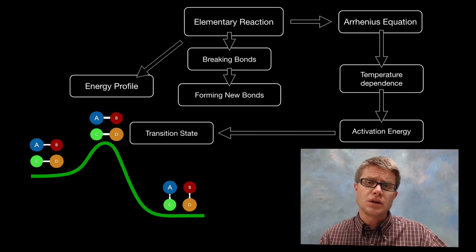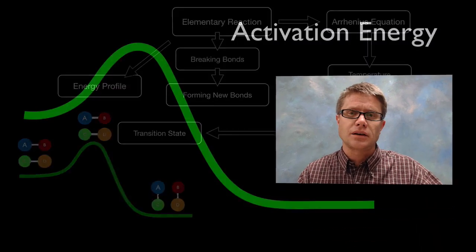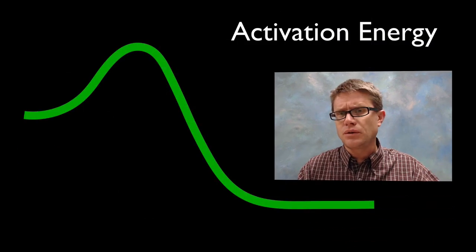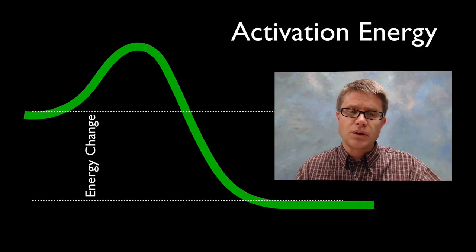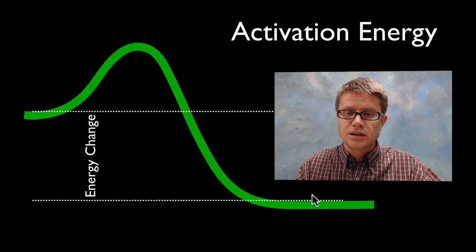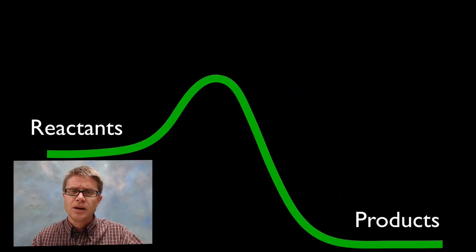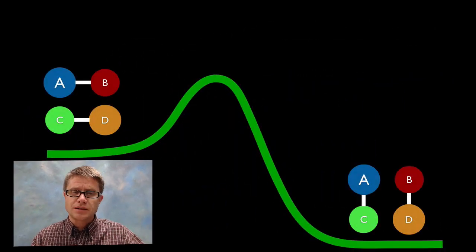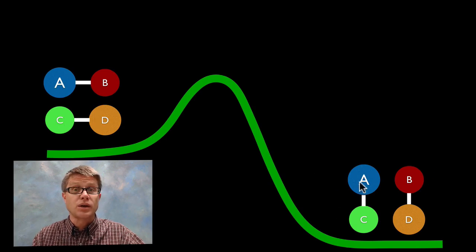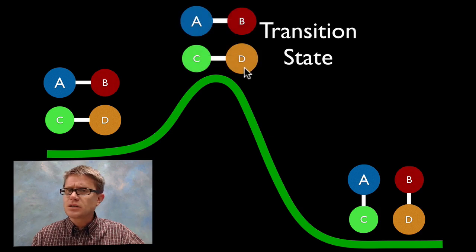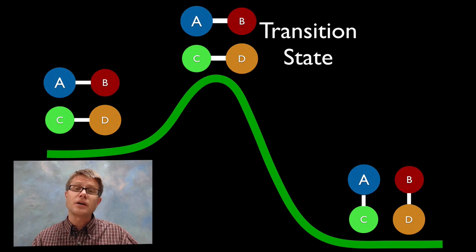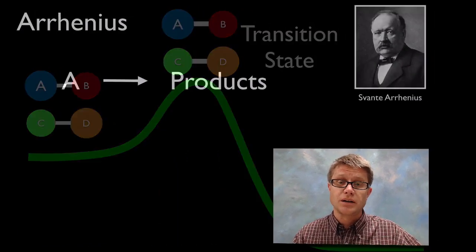We can use the rate constant and the temperature to actually calculate that activation energy. In review: when we have a reaction, these are the reactants and this is the product's potential chemical energy. The activation energy is the amount of energy we have to put into the system. The transition state involves the weakening of bonds so we can break them apart and then form new bonds in the products.